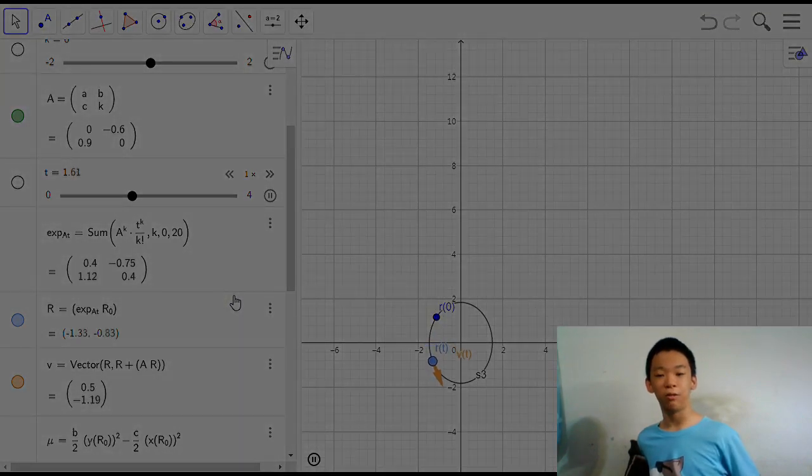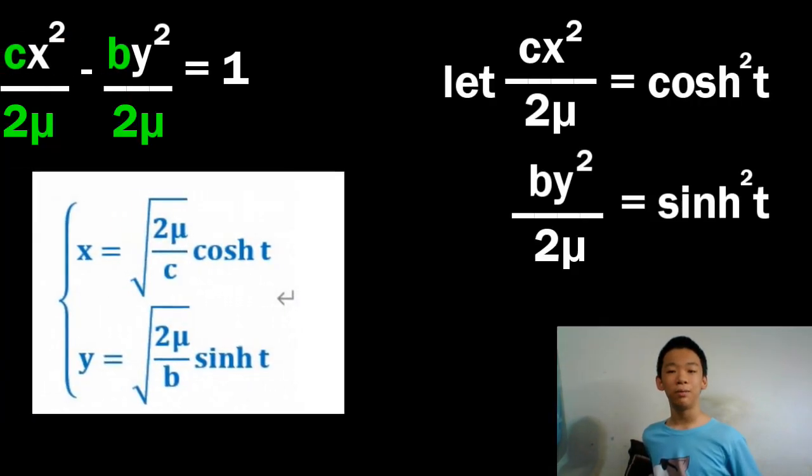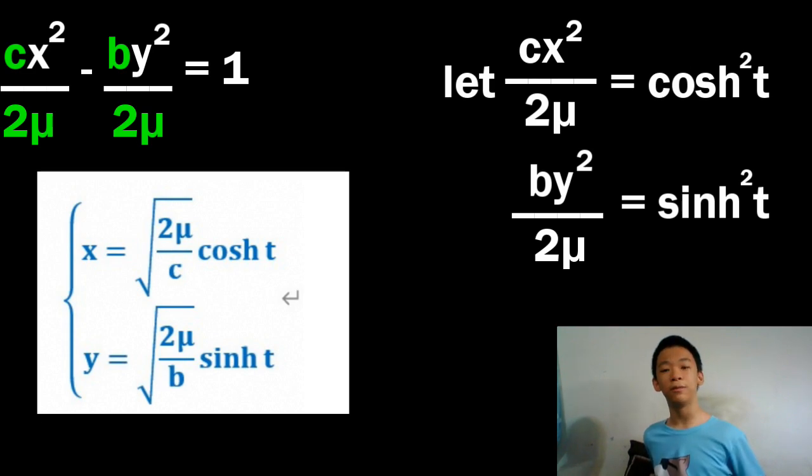If we want to parameterize this equation, we'll have to bring in the hyperbolic functions. Specifically, x equals the square root of 2 mu over c times cosh of t, y equals the square root of 2 mu over b times sinh of t, where sinh and cosh are the hyperbolic sine and cosine functions.